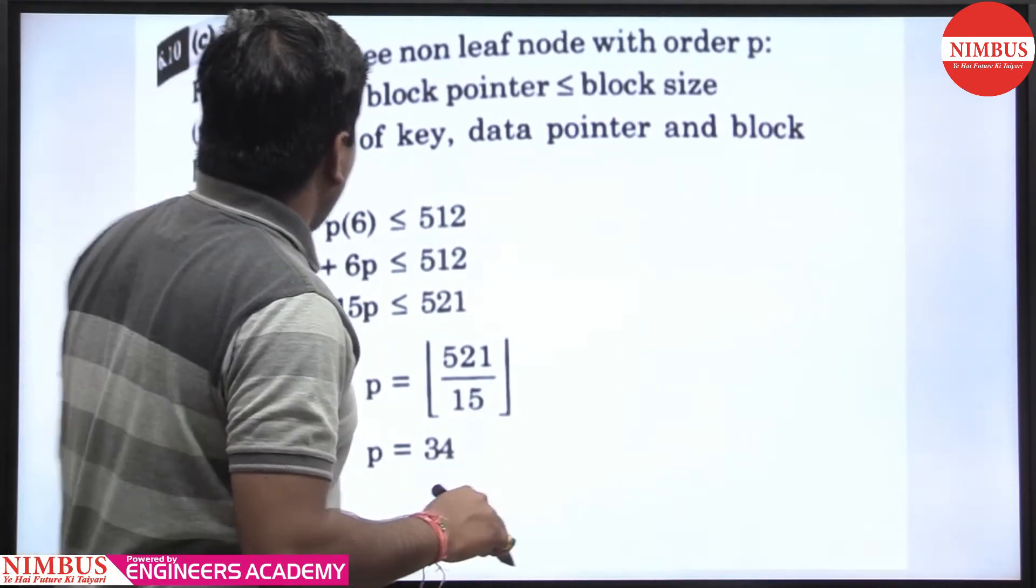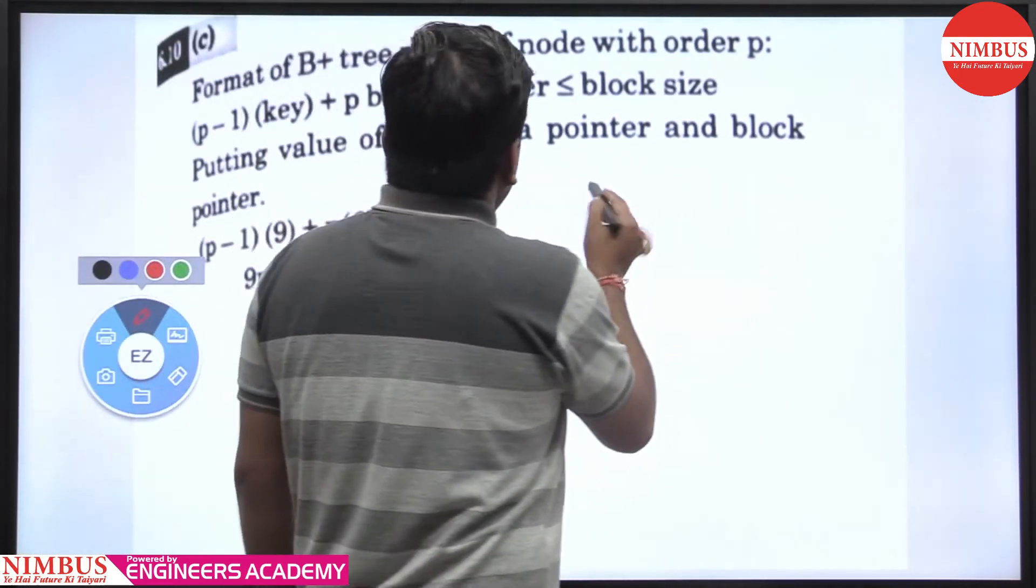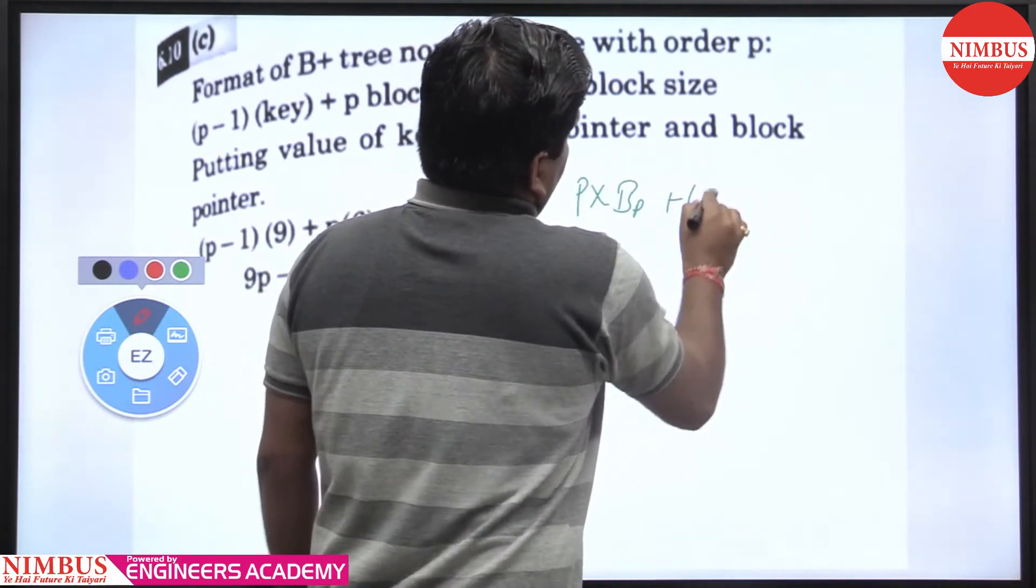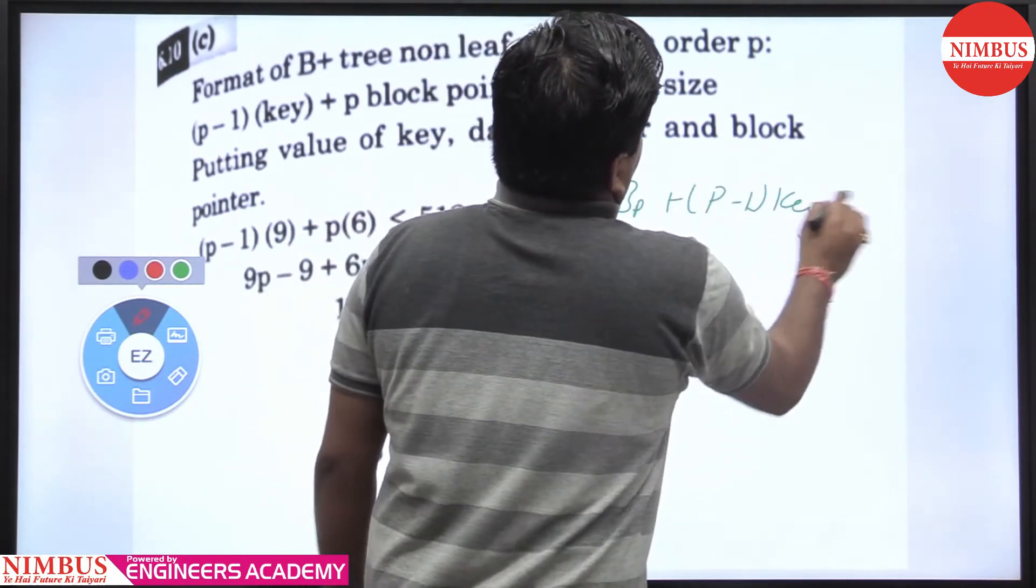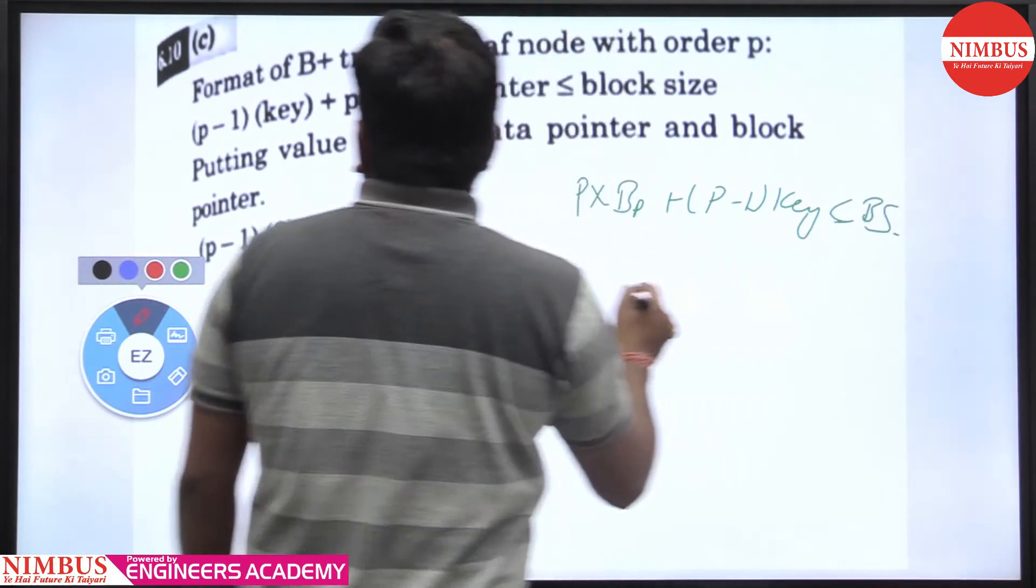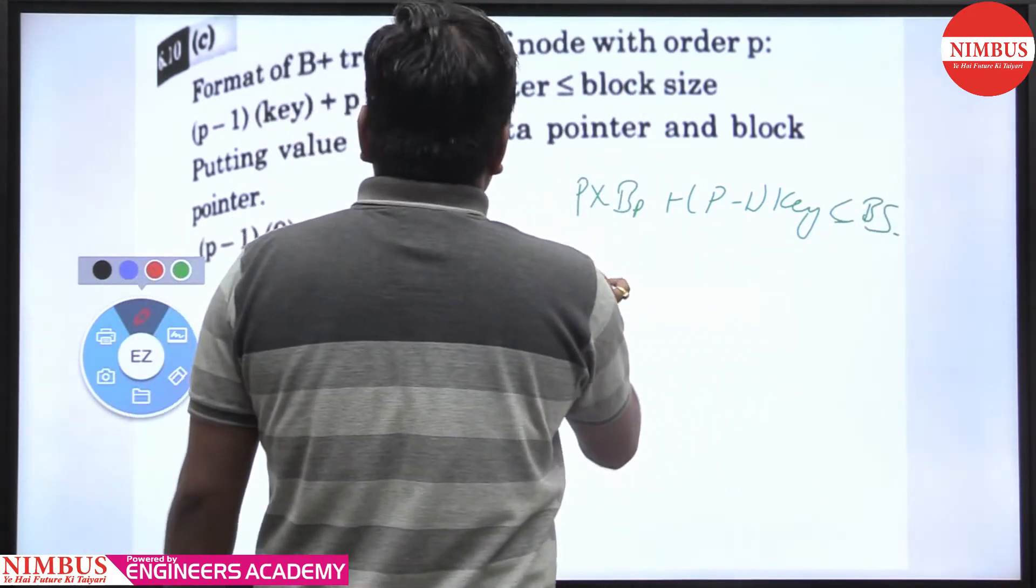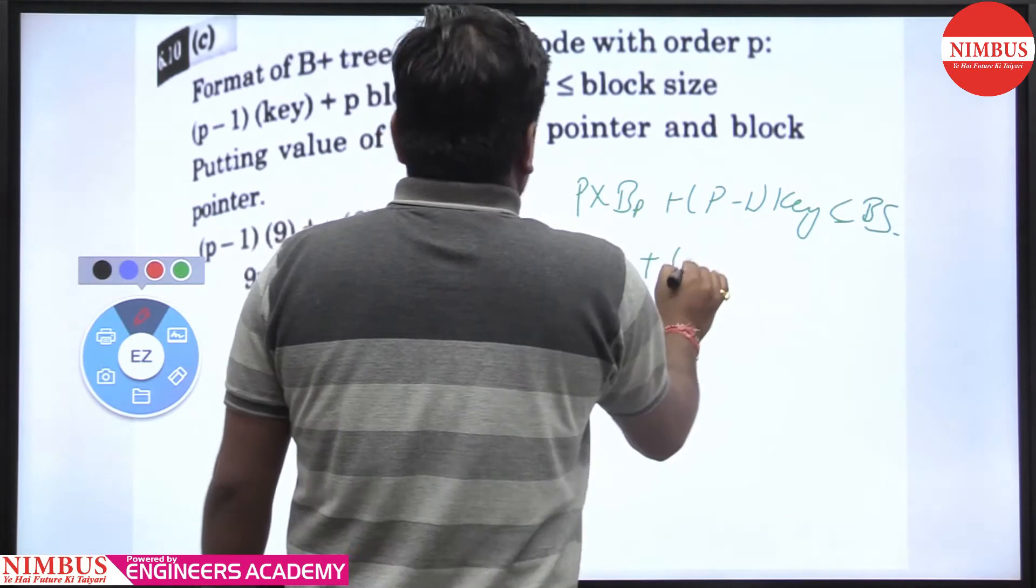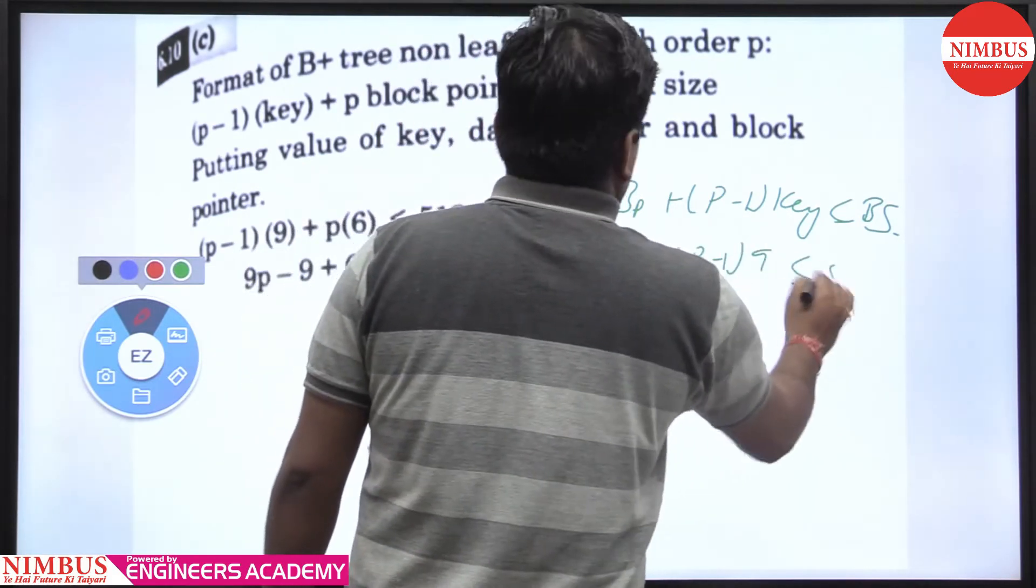You can see in a non-leaf node means internal node, internal node may have P block pointers, P minus 1 keys, less than equal to block size. What is the block pointer size? 6 bytes. What is the key size? 9 bytes, less than equal to 512.